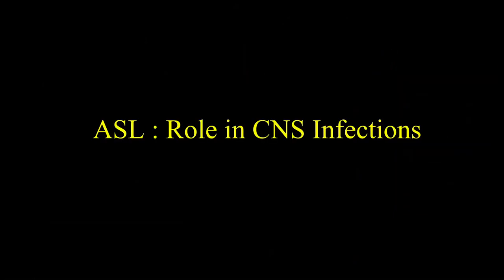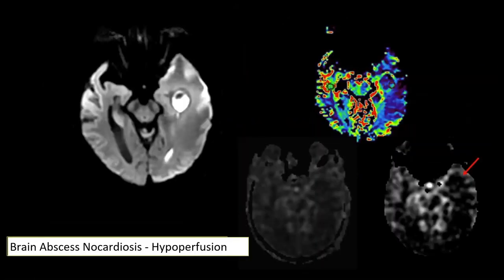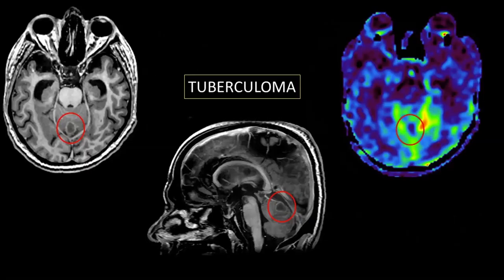Coming next to the role of ASL in CNS infections. Most infectious etiologies are hyperperfused, as we see in this case of a brain abscess with typical features including restricted diffusion. Not very difficult to diagnose on routine MRI, but ASL will definitely support the diagnosis by depicting hyperperfusion and limiting differentials. Another example — a very small tuberculoma — emphasizes that though the area of abnormality is small and in the posterior fossa, ASL is sensitive enough to show hyperperfusion.